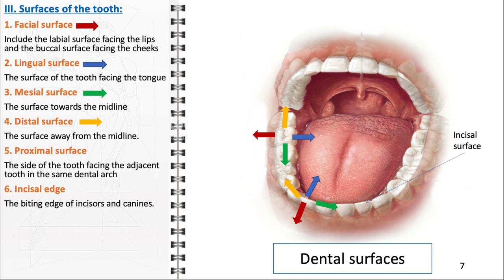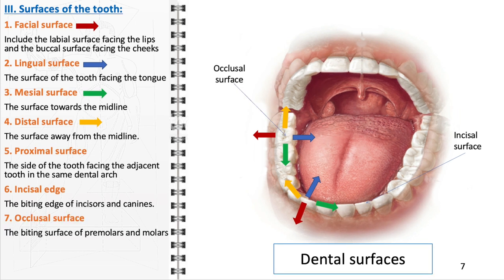The incisal edge, found on incisors and canines, is the sharp edge utilized for biting and cutting food. The occlusal surface, characterized by its rough, irregular texture, is found on premolars and molars and is designed for grinding and masticating food.